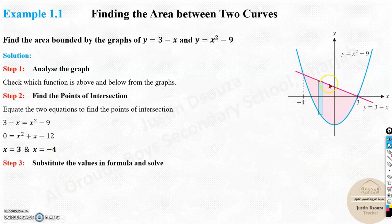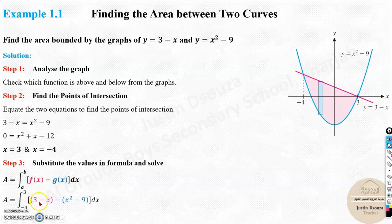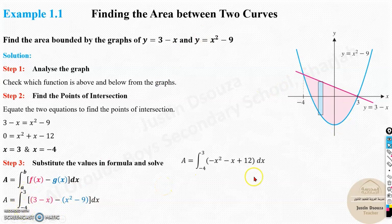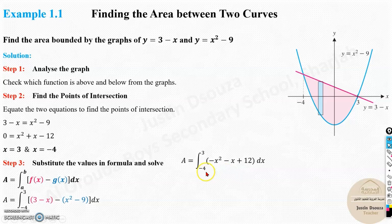We can double-check with the graph — yes, those are the intersection points. Now substitute the values in the formula. The upper function is the pink one, 3 minus x, which is linear. The lower function is the parabola x squared minus 9. The limits are from minus 4 to 3. Simplify: multiplying the negative sign inside gives minus x squared plus 9. Rearranging: minus x squared minus x plus 12. We integrate this definite integral. Power increases: x cubed divided by 3, minus x squared divided by 2, plus 12x, with limits minus 4 to 3.